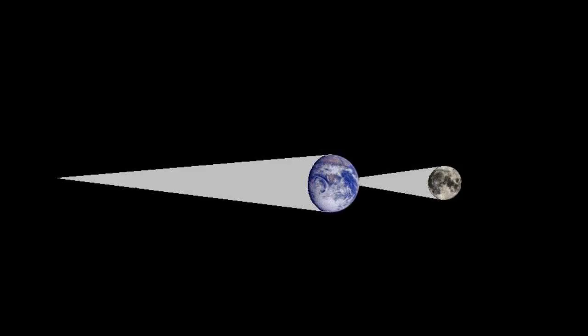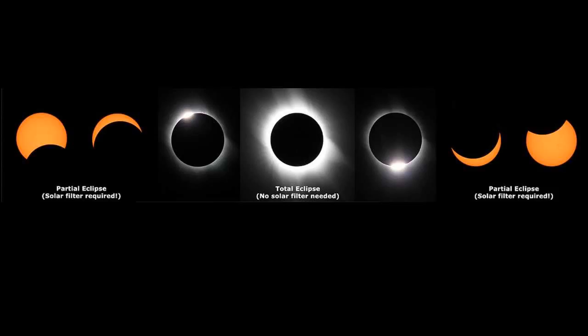A total solar eclipse occurs when the Moon passes between the Earth and the Sun such that its shadow crosses over a portion of the Earth's surface. During a solar eclipse, it is not safe to look at the Sun as long as part of it is visible. It is, however, safe to look at the Sun without any protection during totality, when the corona is visible.